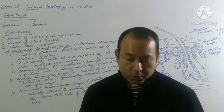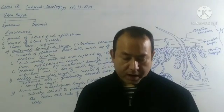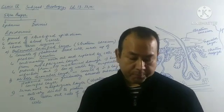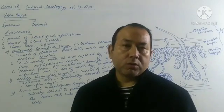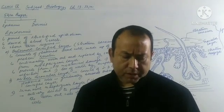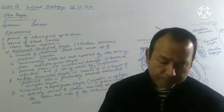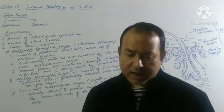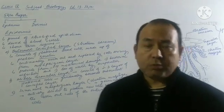The skin can be divided into two main parts: skin proper and derivatives of the skin. Skin proper includes structures like epidermis and dermis. Derivatives of the skin — meaning structures derived from the skin proper — include nails, mammary glands, sweat glands, and sebaceous glands. We'll be discussing each of them one by one.